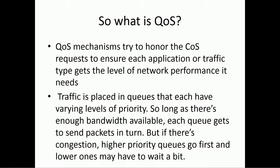QoS tries to honor the priority of CoS — the requests that ensure the application or traffic is getting the level of network performance it was assigned. If it's assigned a higher priority but can't fully meet it, it's still going to try its best. QoS works by placing traffic into queues.